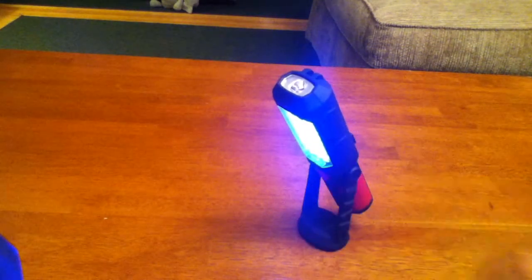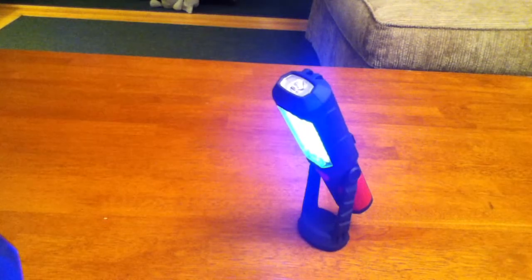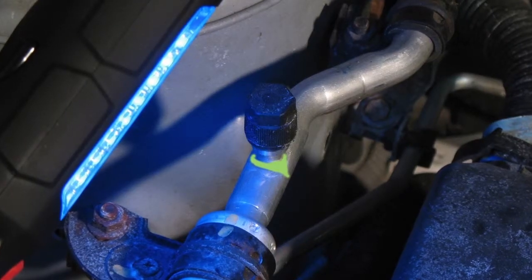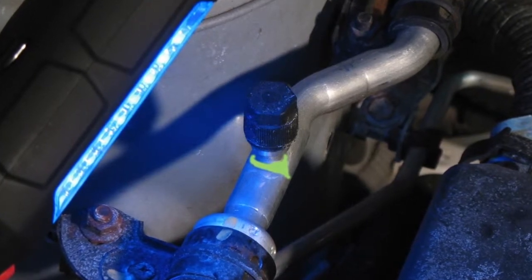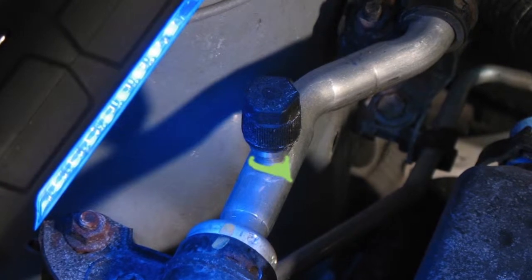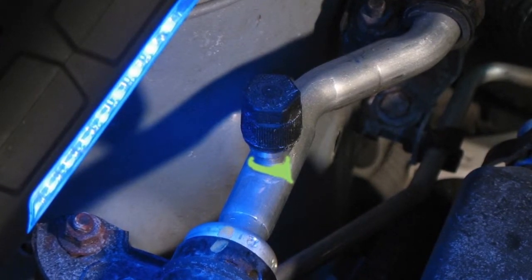There are a number of uses for ultraviolet light. One is finding scorpions, which fluoresce a bright blue-green under ultraviolet light. Pet urine, cat urine, and dog urine will fluoresce under UV light. You can use it for finding leaks if you use a UV dye for oil leaks, air conditioning leaks, or other automotive fluid leaks.